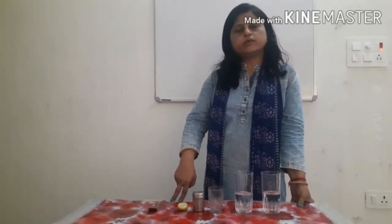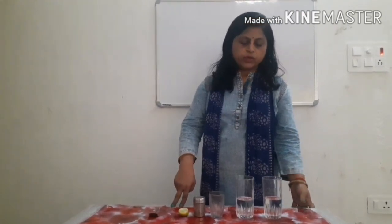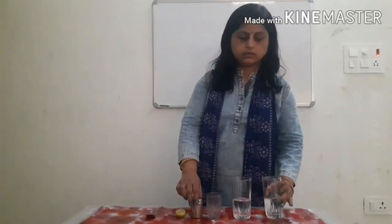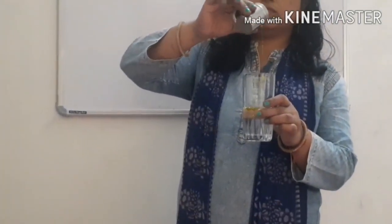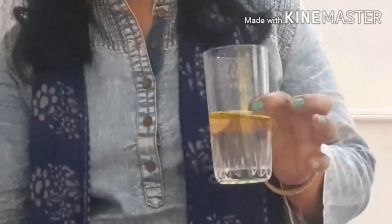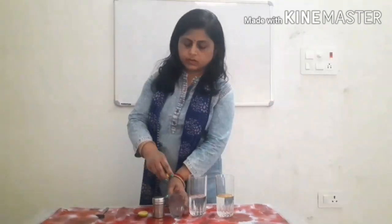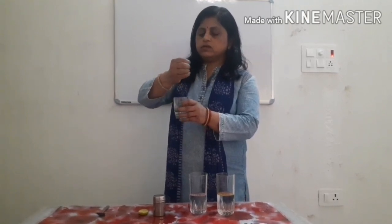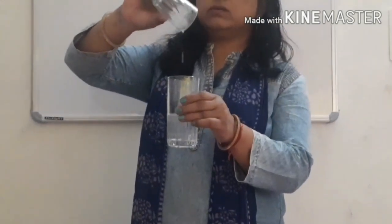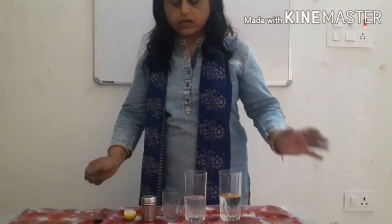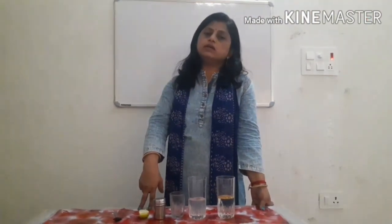Some liquids are soluble in water and some are insoluble. We take a glass tumbler and put mustard oil in it — mustard oil is not soluble in water. In another glass tumbler, we take lemon juice and mix it with water — lemon juice dissolves in water. So lemon juice is soluble in water but mustard oil is insoluble in water.